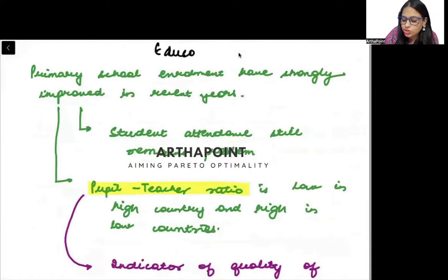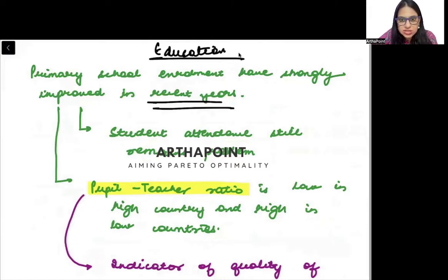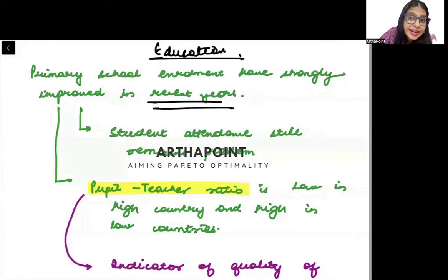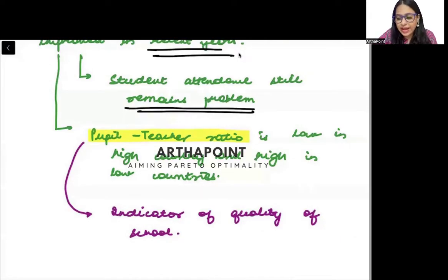Now let's talk about education. Under education, we have seen that primary school enrollment has improved in recent years across countries. But enrollment is not enough for literacy — it is possible a child was enrolled but then not sent to school. So school enrollment is not a sufficient measurement of literacy; school attendance is important. And it has been seen that school attendance still remains a problem.